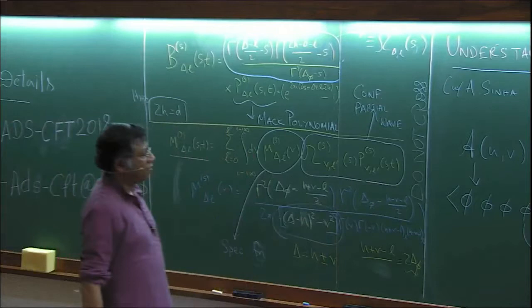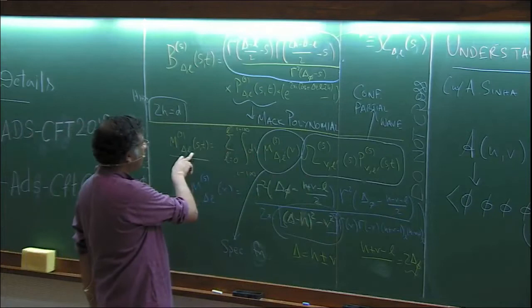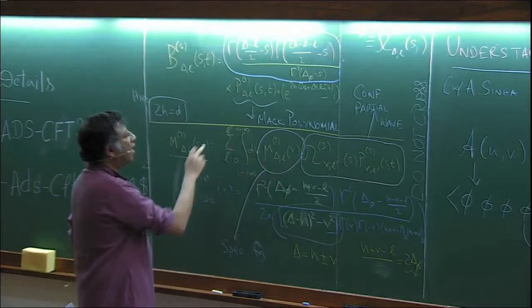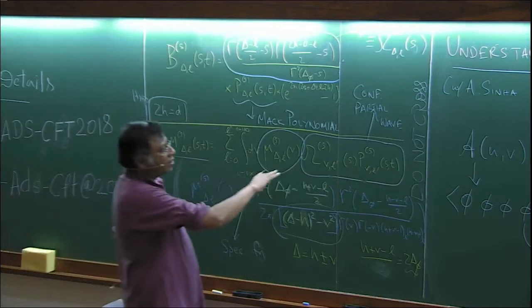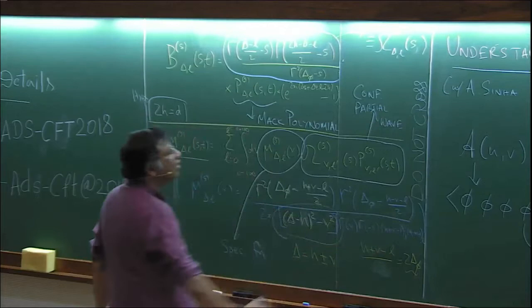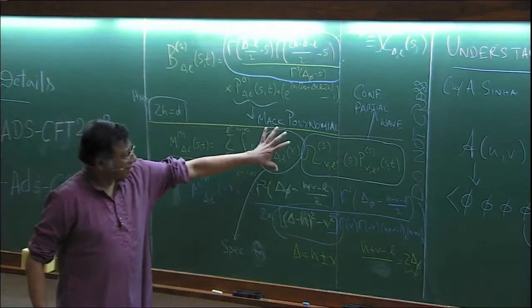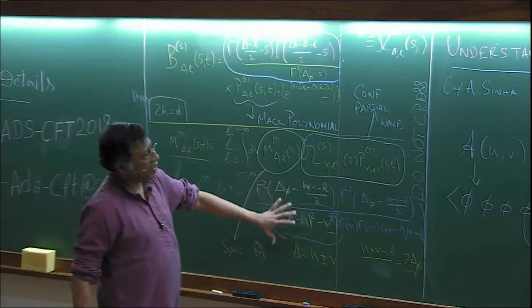That's a feature of the Witten block which was very important in studying anomalous dimensions. You see that this spectral function has that property: it has poles at these double-trace values 2 delta_phi, and that's what this piece of the spectral function determines. For a fixed L, there's a sum from zero to L, and the leading piece corresponds to the L-prime equal to L value. This spectral function contains the physical information of what poles are exchanged.